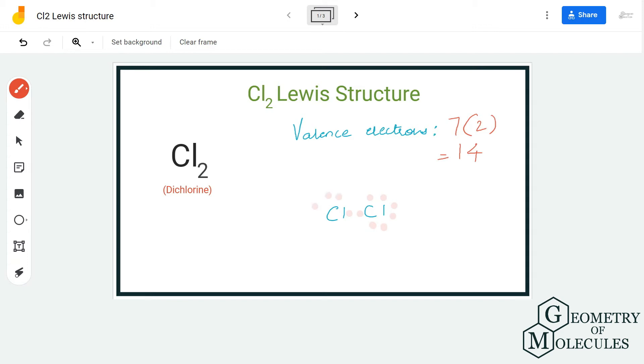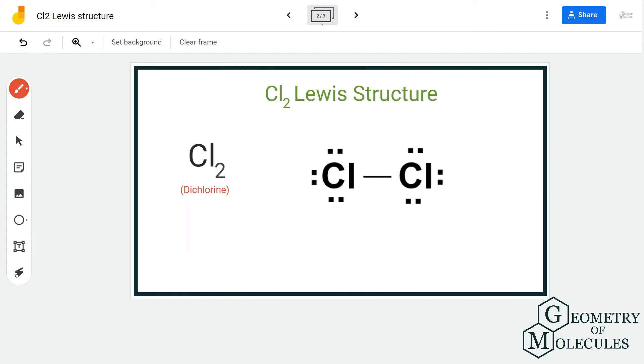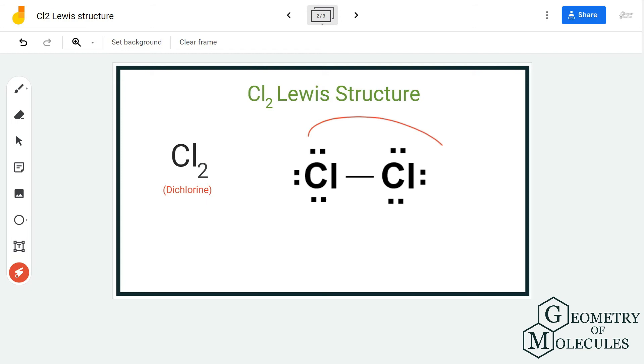Doing that we will have a complete octet for both these chlorine atoms, as both the chlorine atoms will have eight valence electrons in their outer shell. As we have used up all the valence electrons and these chlorine atoms have a complete octet, this is the dot structure for chlorine gas.